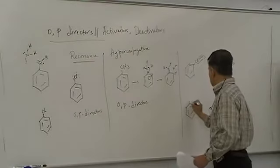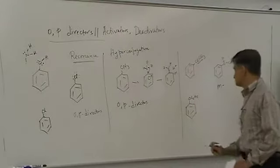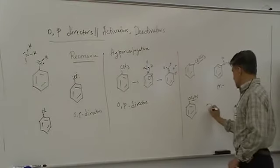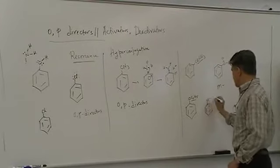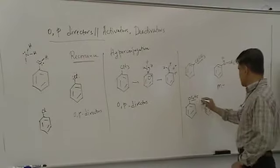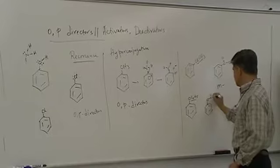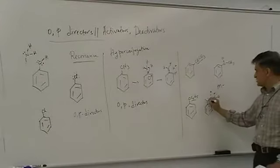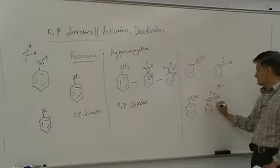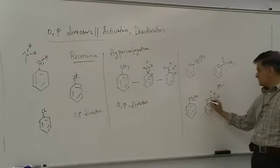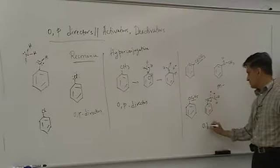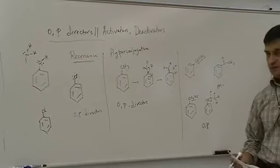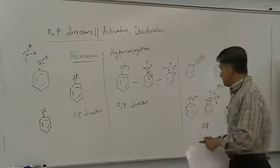Next example: OC2H5 (ethoxybenzene). Writing it explicitly: the oxygen is bonded to the ring on one side and to C2H5 on the other. Oxygen has two bonds and two pairs of electrons — just like in phenol where H is replaced by C2H5. Since oxygen has unshared pairs of electrons directly bonded to the ring, this is an ortho-para director. This shows how you can quickly predict directing effects.